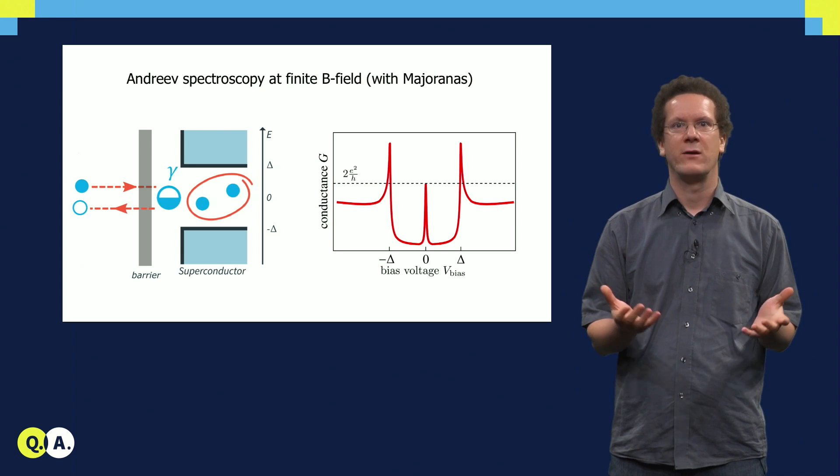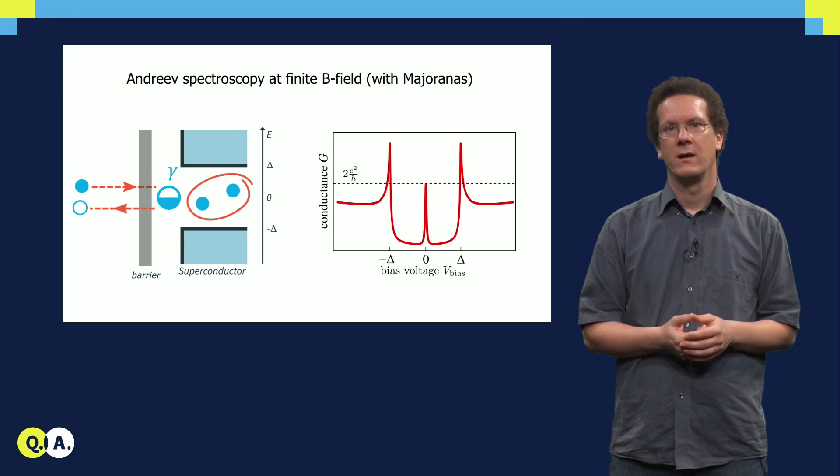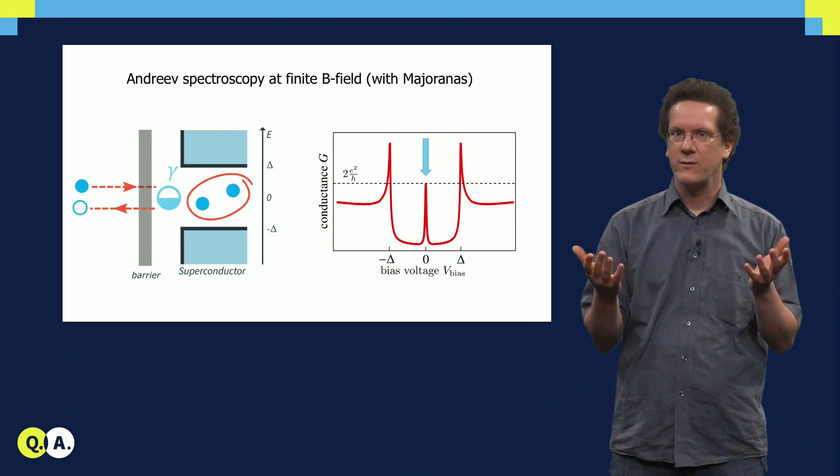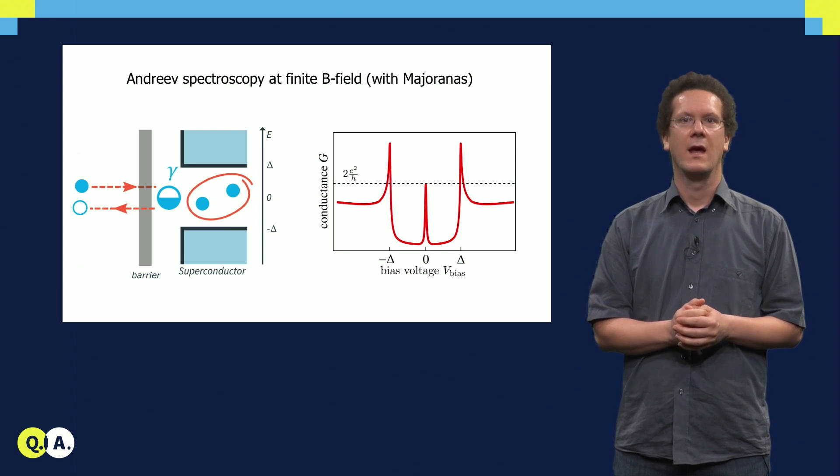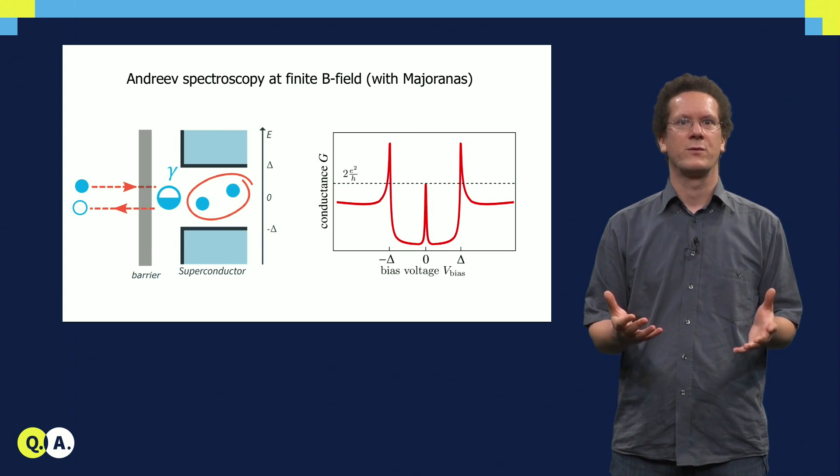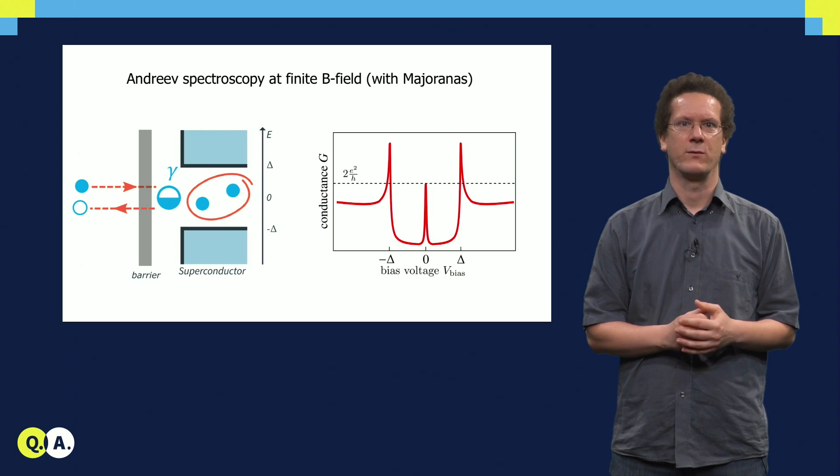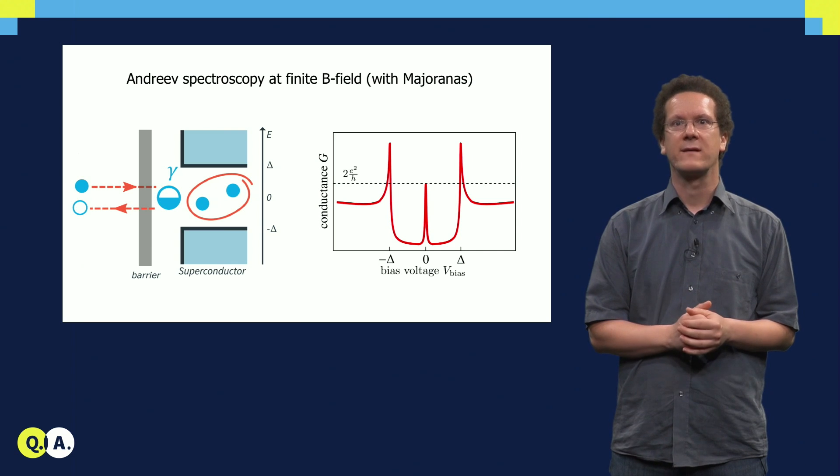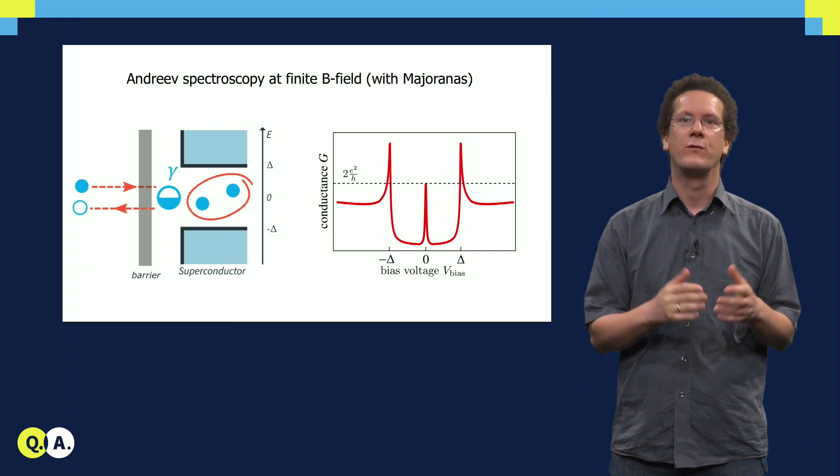What happens if you have a Majorana bound state there? A Majorana bound state always sits at zero energy and gives rise to a resonant process at zero bias voltage. In the conductance, we thus observe a peak at zero bias voltage. Since this is a resonant process, the conductance is actually quantized at the value of 2e²/h, at least for zero temperature.